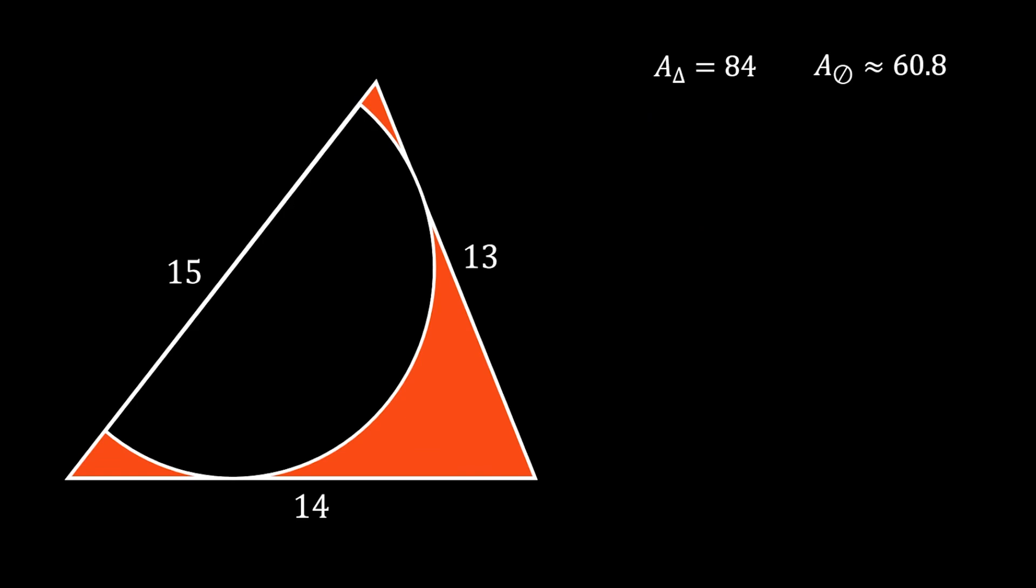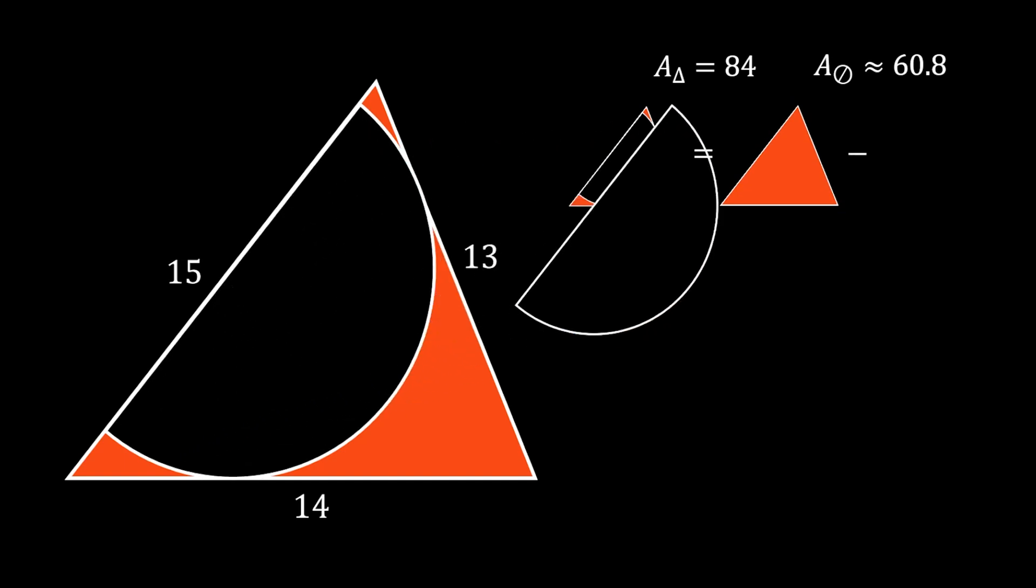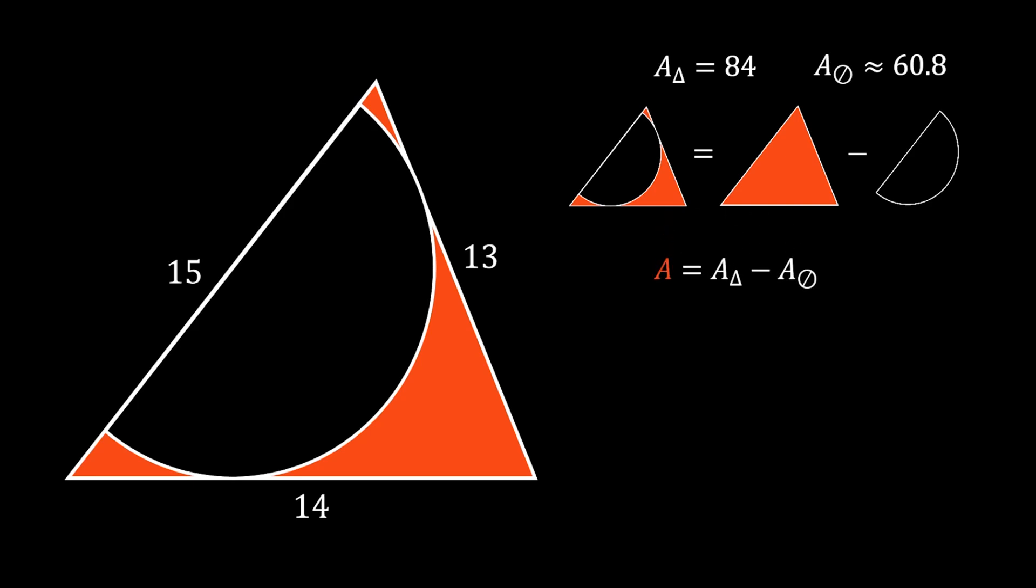All right, so now we can find our orange shaded area as the difference between the area of the triangle and the area of the half circle. If we want to write this down as a formula, it will look something like this.